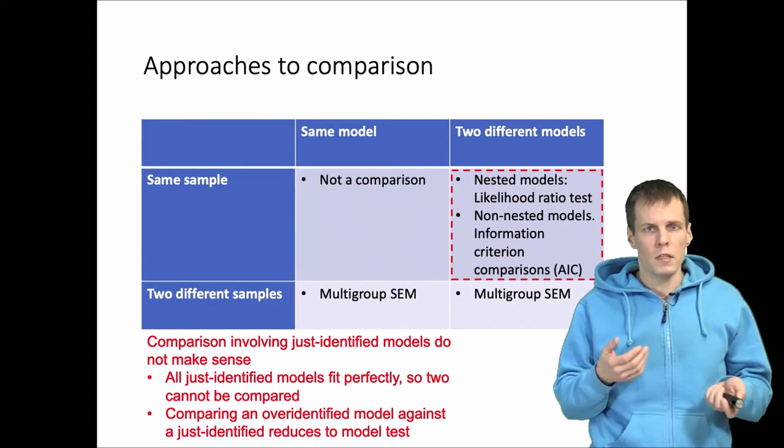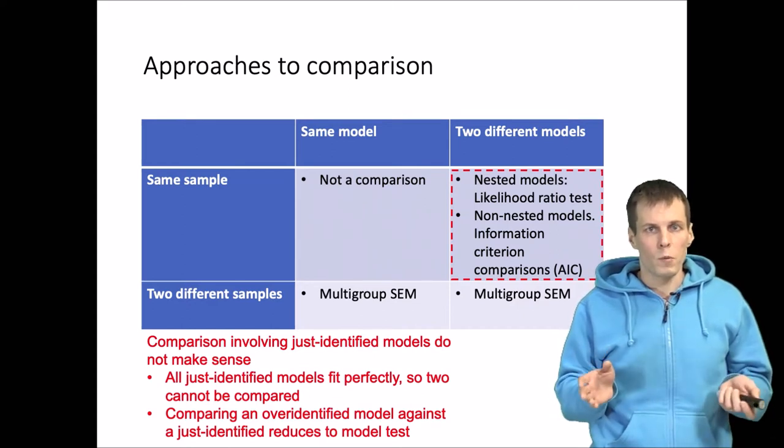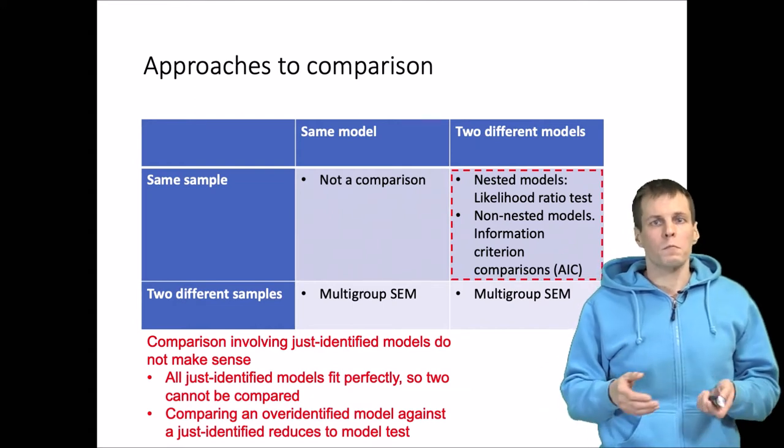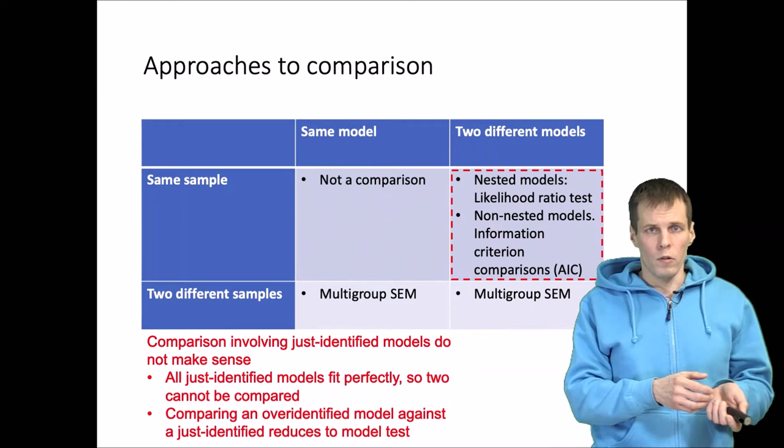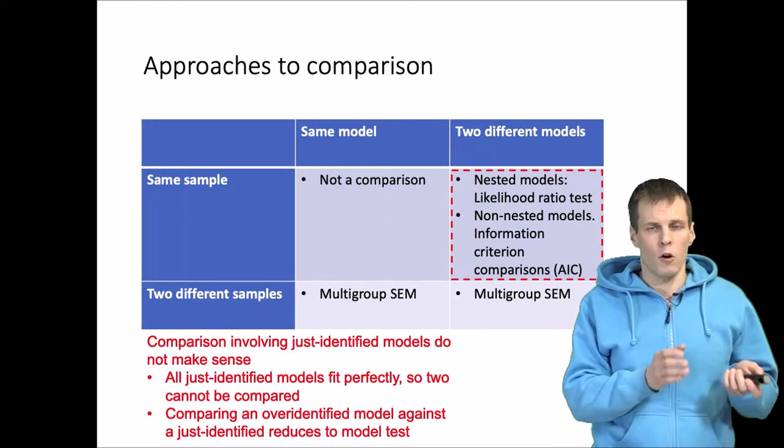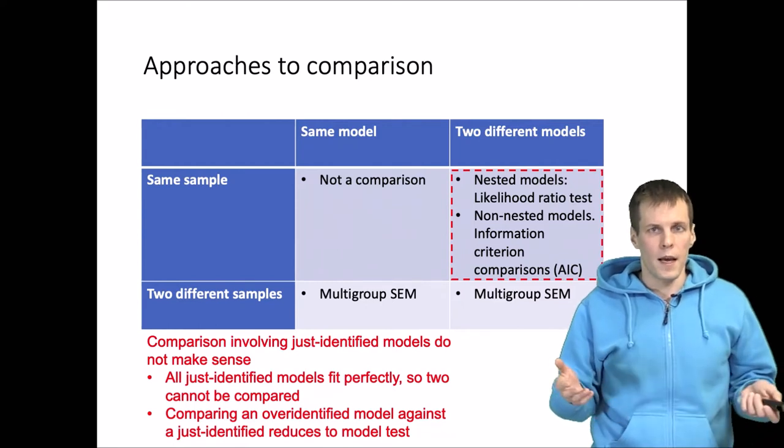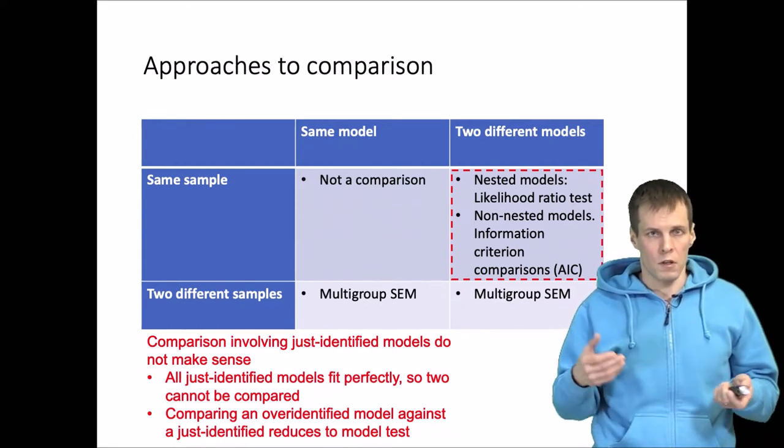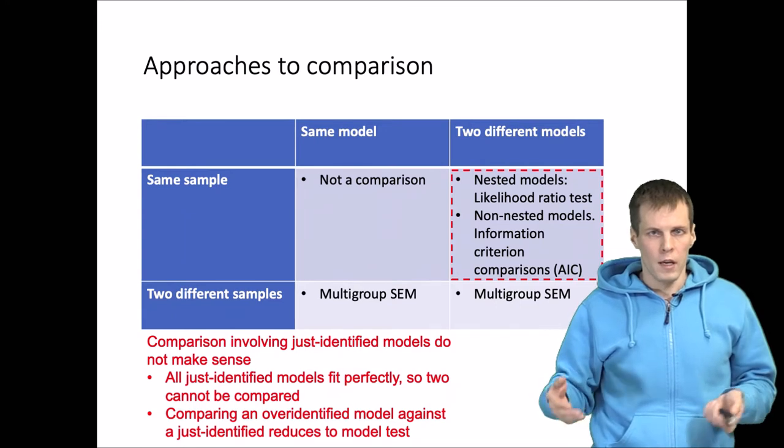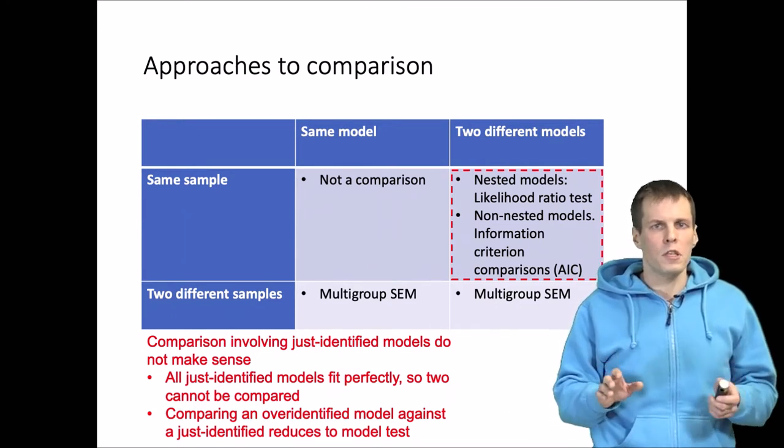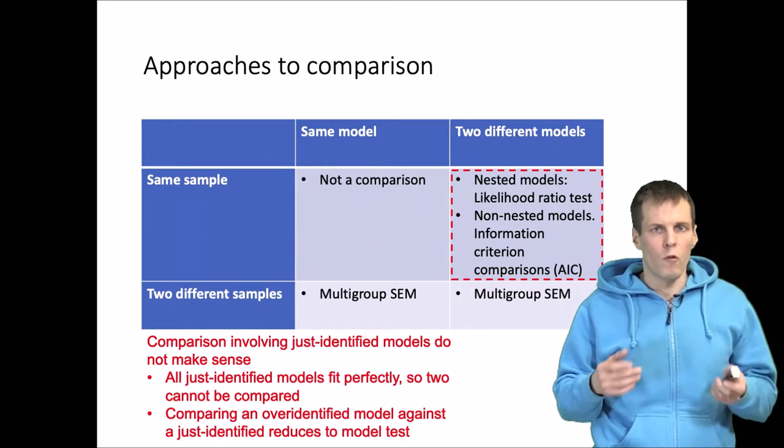If you are comparing two just-identified models, then both will fit the data perfectly and there's really nothing to compare. If the comparison model is over-identified and the benchmark model is just-identified, then that basically reduces just to a test of the over-identified model and is not a model comparison. So for model comparison purposes, both models should be over-identified.